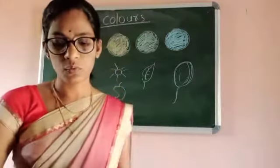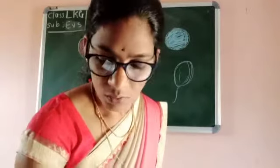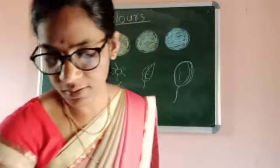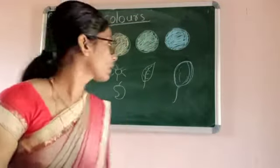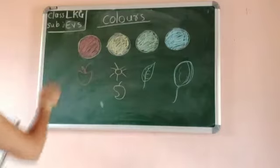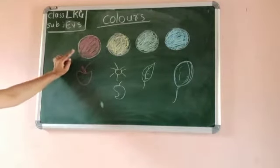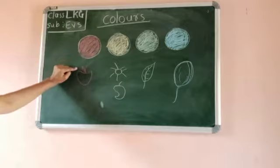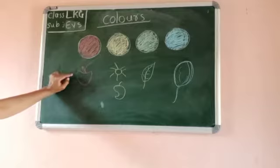Now we will learn about some colors here. Look at the first — what color is it? Red color. What is this? Apple. Apple is red color. Apple is good for health, so you eat it every day. Apple is a good fruit.